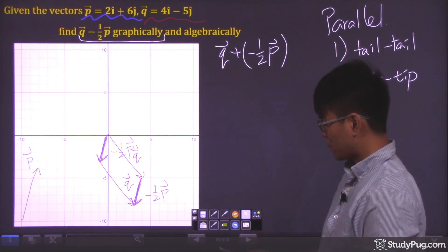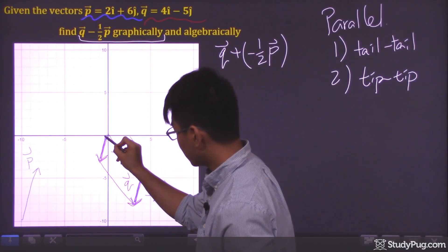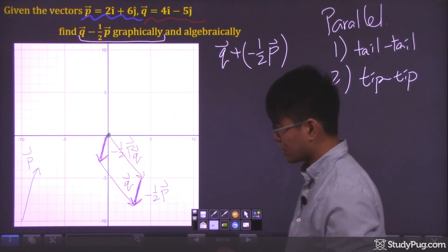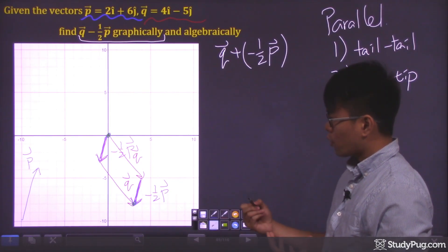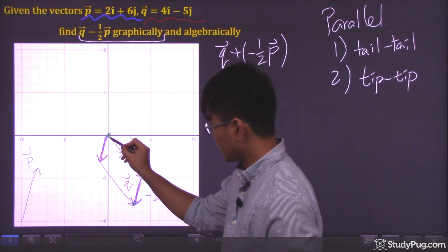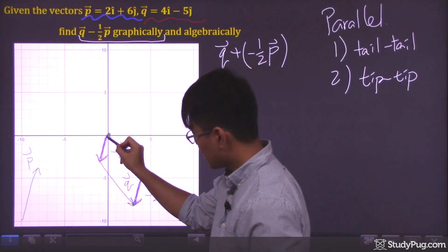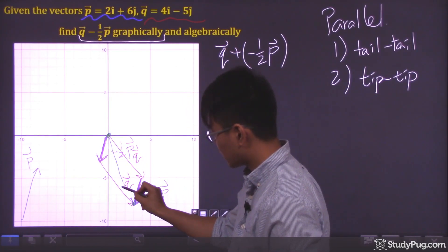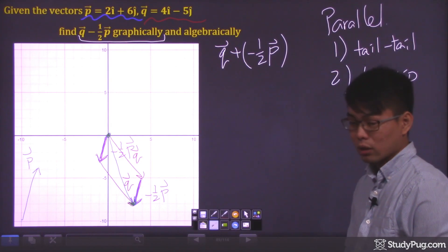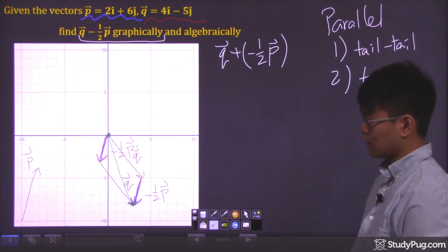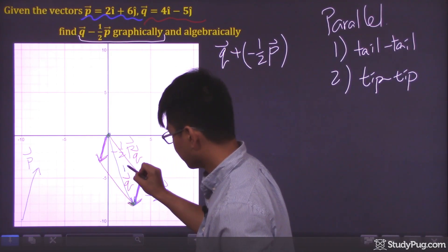Our final step: the point where the tails are connected is our initial point, and the point where the tips are connected is our terminal point. We form a vector that starts from the tail-connection point and whose tip touches the tip-connection point. This green vector here is our resultant vector.